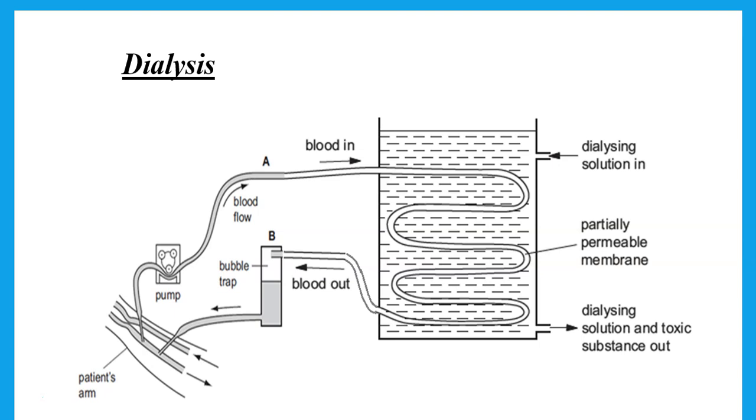Dialysis means his blood will be passed through partially permeable membranes that are surrounded by a solution that has glucose and amino acids, but no urea. So, the dialysis solution has the things that are required, but no urea, so that when the blood flows through these tubes, the urea will diffuse out into the dialysis solution. Excess salts will diffuse out, and then we're going to return the blood back to the patient's arm.